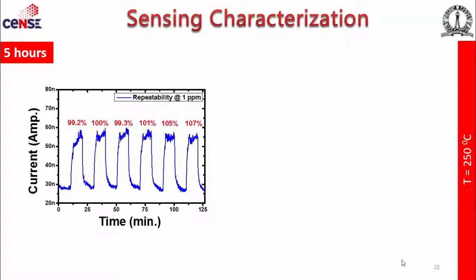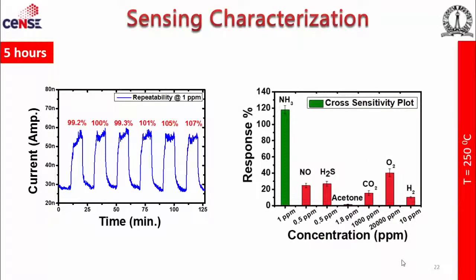For repeatability, tested at 1 ppm, it was quite repeatable. For specificity, the gases chosen have significance for breath analysis — H2S is exhaled during bad breath and halitosis, acetone is released during diabetes. The concentrations were also chosen based on disease-stage levels: for example, 0.5 ppm for NO, 1.8 ppm for acetone. The sensor shows good selectivity towards ammonia over these interferent gases.